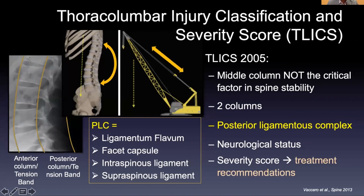The second thing to look at is the morphology of compression fractures, like burst or partial burst fractures. Last but not least, we look at the patient's neurologic exam — whether they are neurologically intact, have an incomplete spinal cord injury, complete spinal cord injury, or cauda equina syndrome. These are all taken into account in the severity scale, where higher numbers mean the patient will likely need surgical intervention.